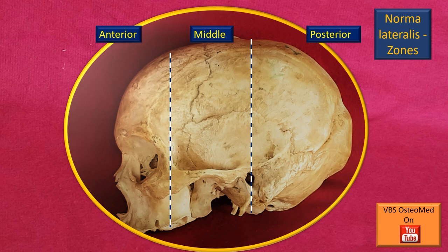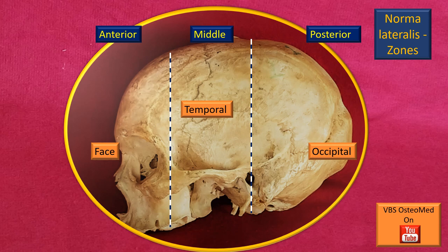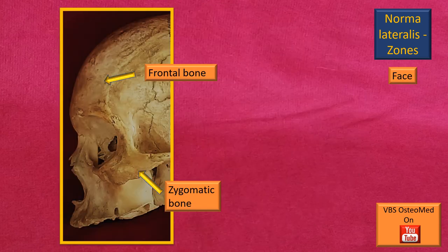Now let's divide the Norma Lateralis into three zones: an anterior, a middle, and a posterior zone. In other words, it is nothing but the face zone, the temporal zone, and the occipital zone.